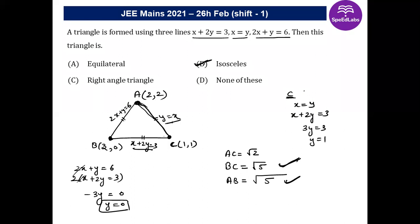Since two sides of the triangle are equal, the triangle is isosceles. The correct answer is option B. These are the two simple questions on straight lines.